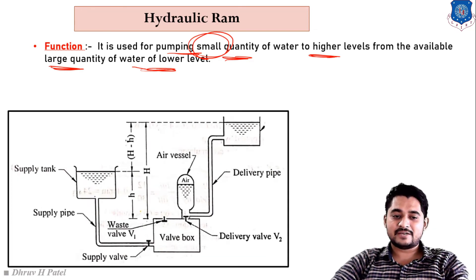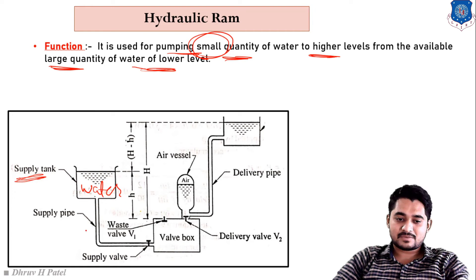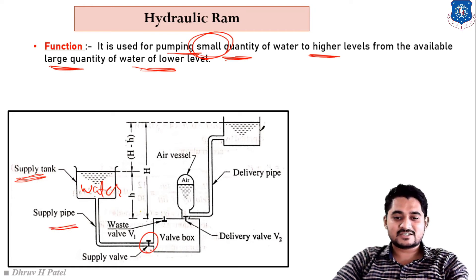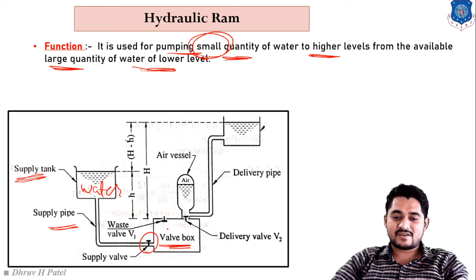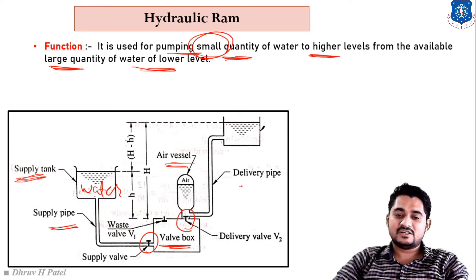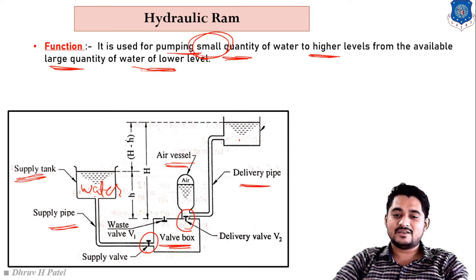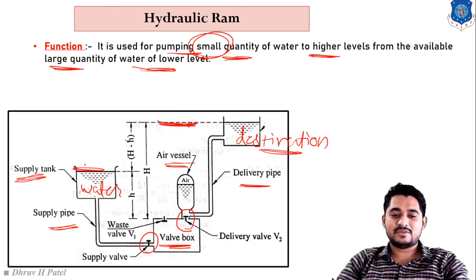In the construction of the hydraulic ram, there is one supply tank with water stored at a lower level. One supply pipe leads to a valve box where three valves are connected — including the supply valve and the delivery valve. From the delivery valve, an air vessel is connected, followed by a delivery pipe that leads to our destination — where we supply a small amount of water at a higher level.